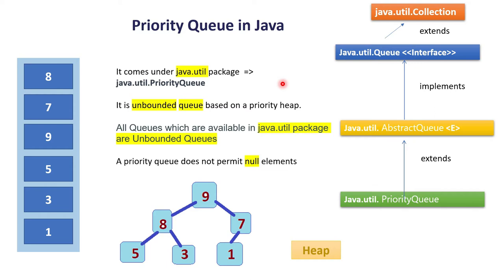Another important point is that a priority queue does not permit null elements. Now we will go to the editor and play with priority queue and its basic properties.